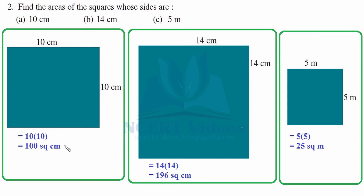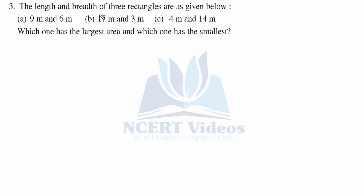We just have to keep the units in mind. Next side is 14 centimeter — it is 14 into 14, which equals 196 square centimeter. Now 5 meter square: 5 into 5 is 25 square meter. This was your question number two.